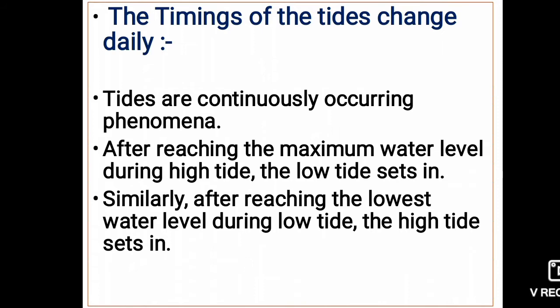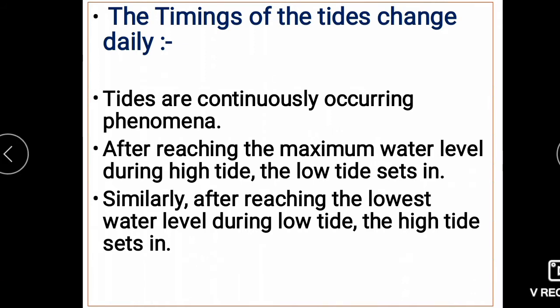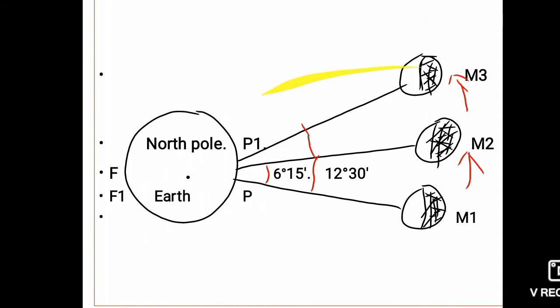In this video we are going to learn why the timings of the tides change daily. Do you know why the timing of tides changes daily? Tides are a continuously occurring phenomenon. After reaching the maximum water level during high tide, the low tide sets in, and similarly after reaching the lowest water level during low tide, the high tide sets in. You will understand why the timings of high tides and low tides change daily — look at this figure.